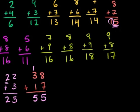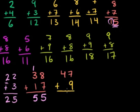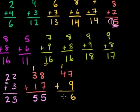Let's do 47 plus 9. Look at the ones place: 7 plus 9, we know that's 16. Write the 6 in the ones place and carry the 1. Now in the tens place: this 1 is 1 ten, so 1 dime plus 4 dimes is 5 dimes. That's 5 dimes and 6 pennies — it's 56.